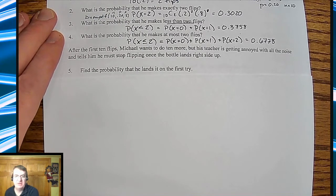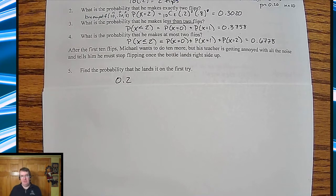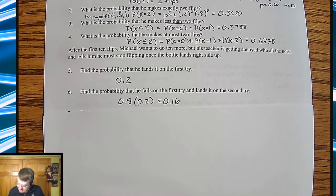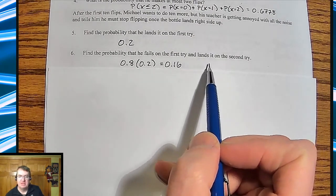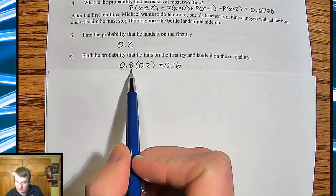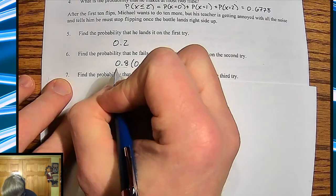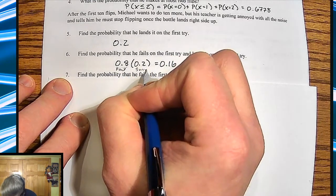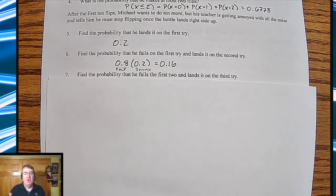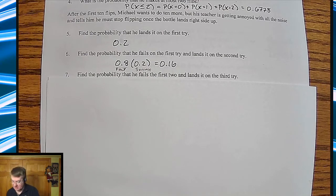So the probability he lands it on the first try is going to be 0.2, because it's a 20% chance of landing it. So now when he goes, what's the probability he makes it on the second try? So again, he fails on the first try, but he makes it on the second. So you have an 80% chance of failure here. So this is the fail and this is the success. So by our probability rules from chapter five, we multiply the two together. So it's now 16% chance it takes him two flips to make it.